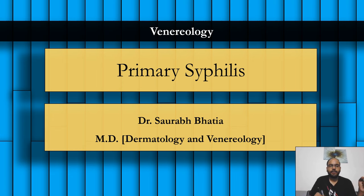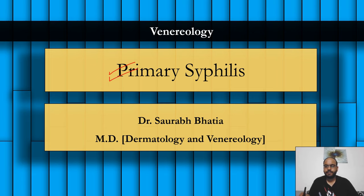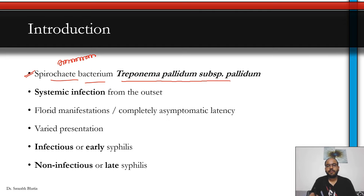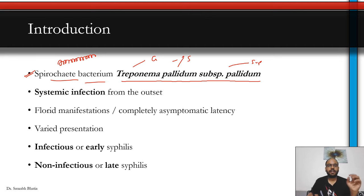This will be a longer video, but don't worry — each and every aspect of primary syphilis will be discussed. Syphilis is caused by a spirochete bacterium shaped like a corkscrew. The name is Treponema pallidum, subspecies pallidum. So Treponema is the genus, pallidum is the species, and pallidum is the subspecies name. This is the complete name of the organism: Treponema pallidum subspecies pallidum.